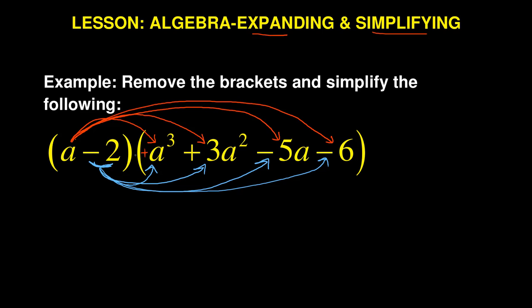So let us start with the first part where A is multiplying. You say equal to A times A cubed — already there are three A's in A cubed, so if you multiply by the fourth one, it is going to be A to the power of 4. Again, A times 3A squared — because A is positive, all the signs remain the same — it is going to be 3A cubed. A times minus 5A is minus 5A squared, and A times minus 6 is minus 6A.